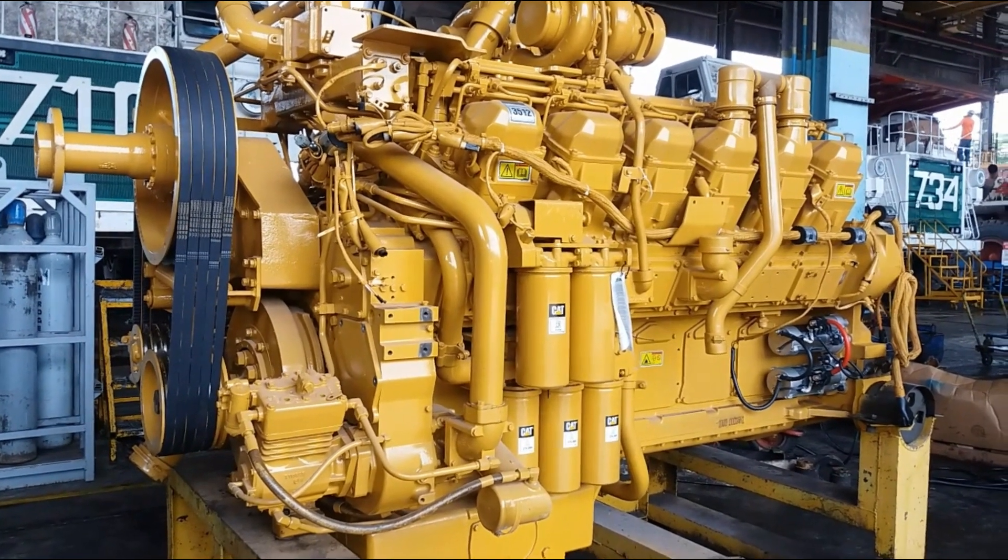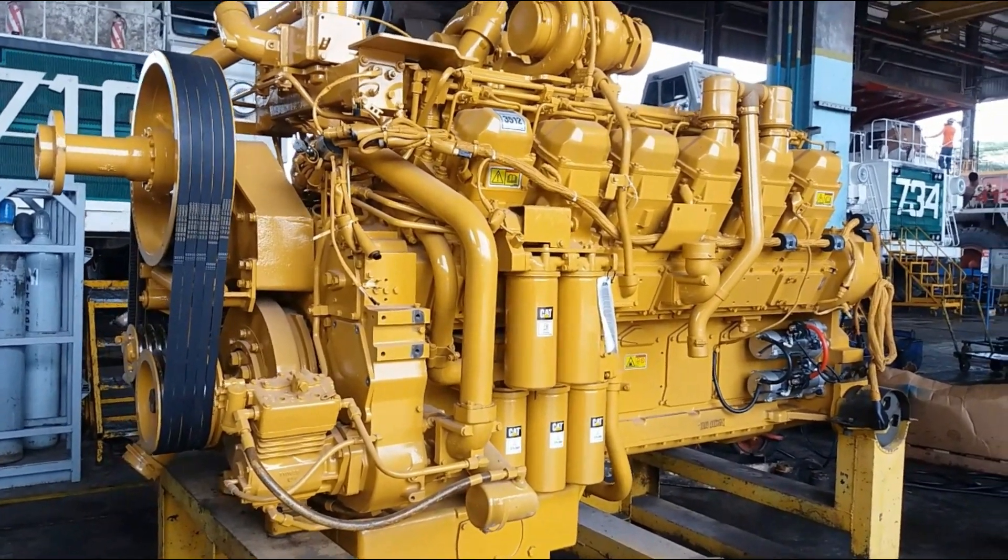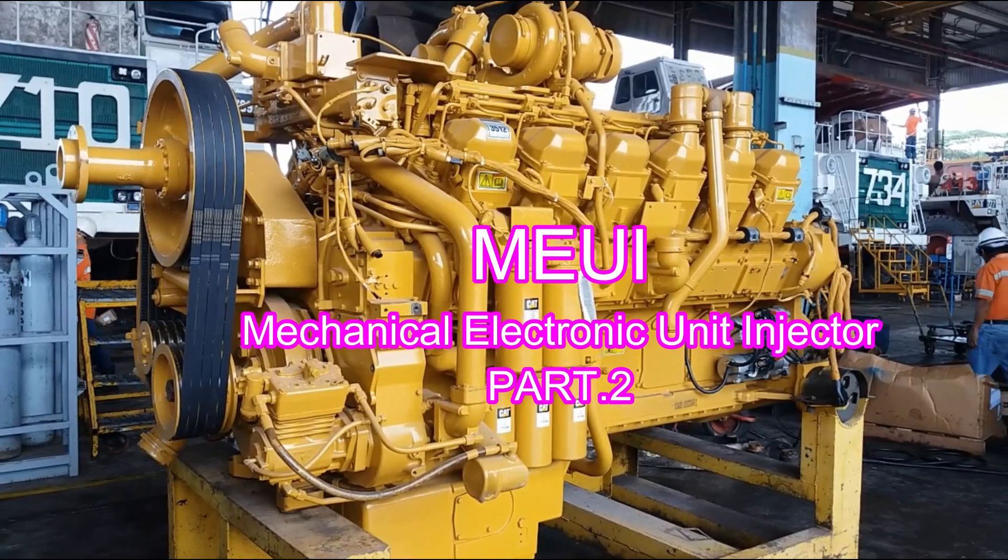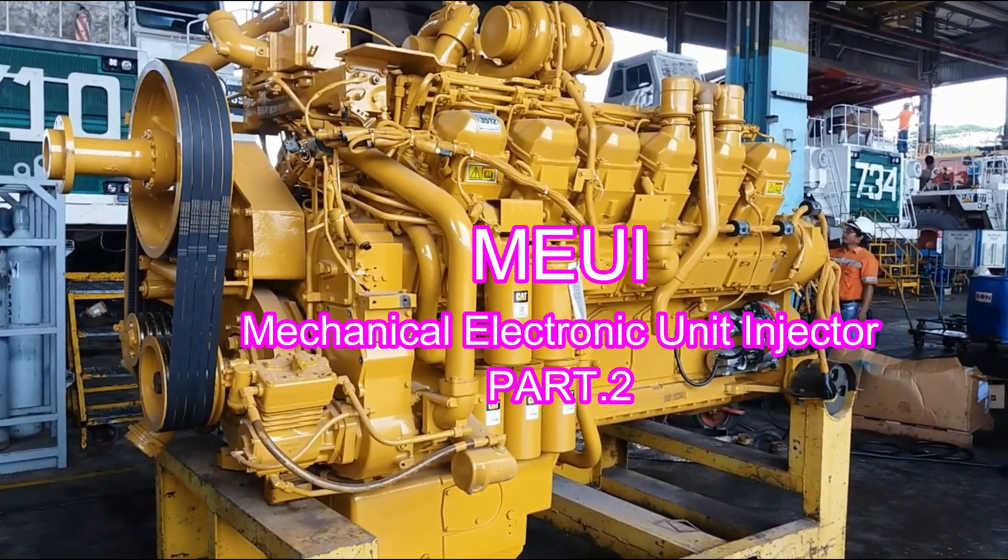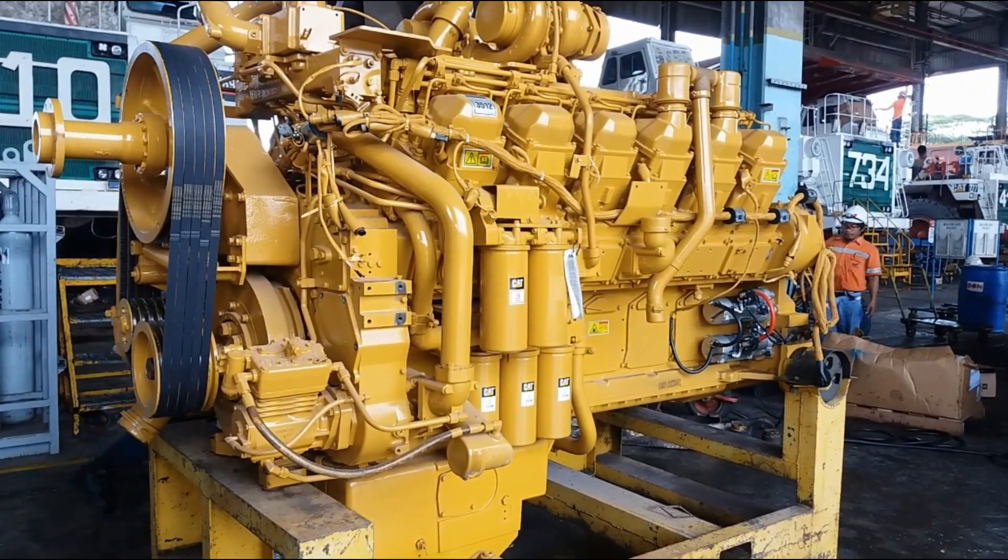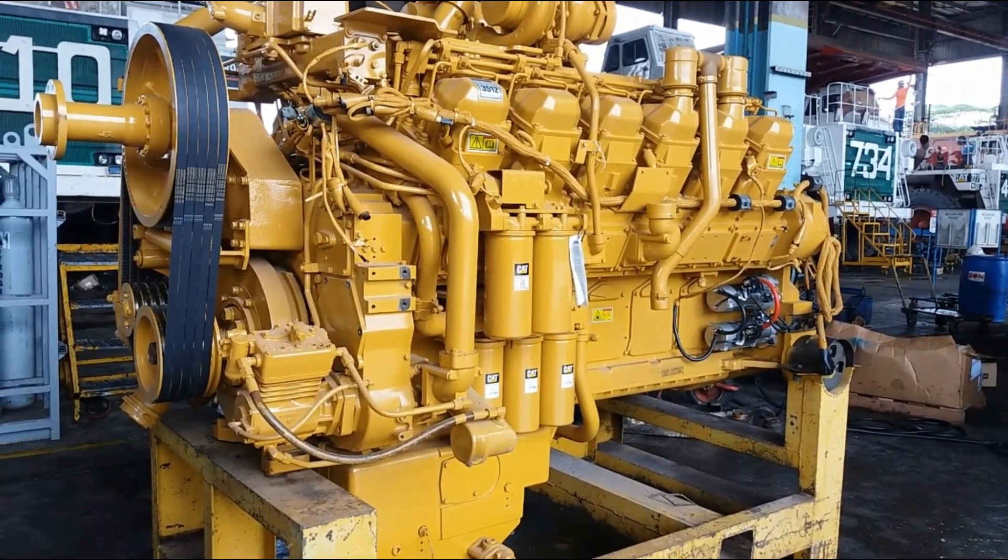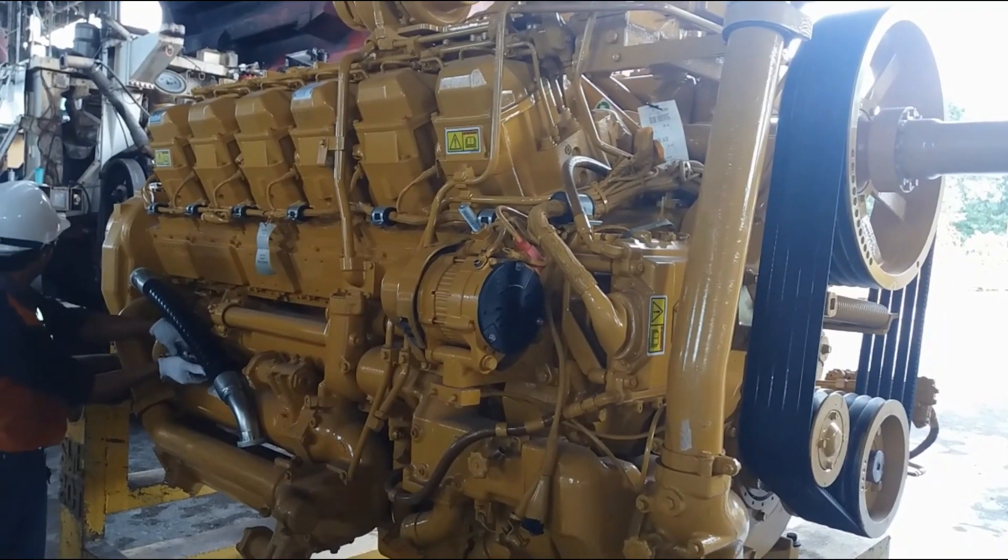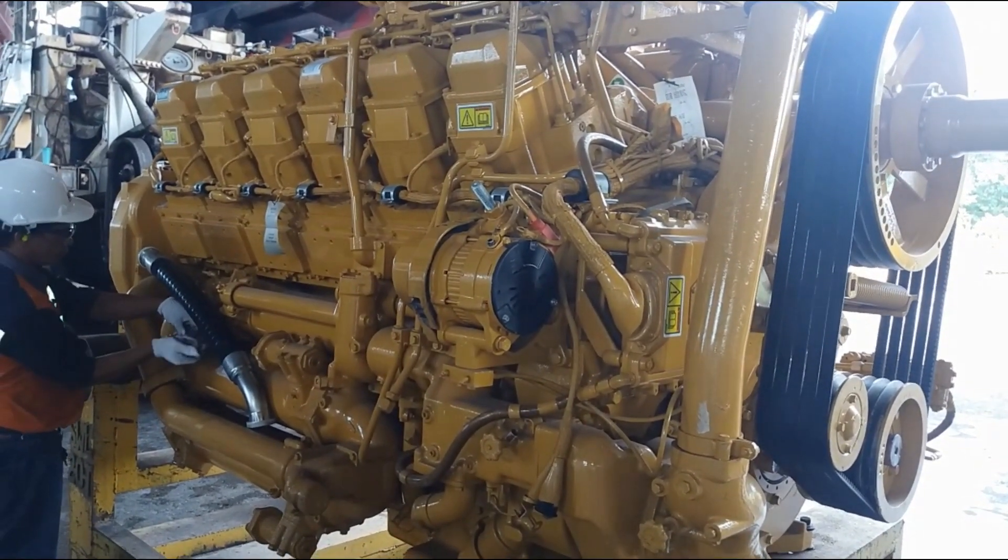Introduction: The 3500 series engine is a diesel engine with a four-stroke cycle. It has a 60-degree V angle between the cylinders of the block. The cylinder bore is 170 millimeters and the piston stroke is 190 millimeters. Each cylinder has approximately 4,310 cubic centimeters.